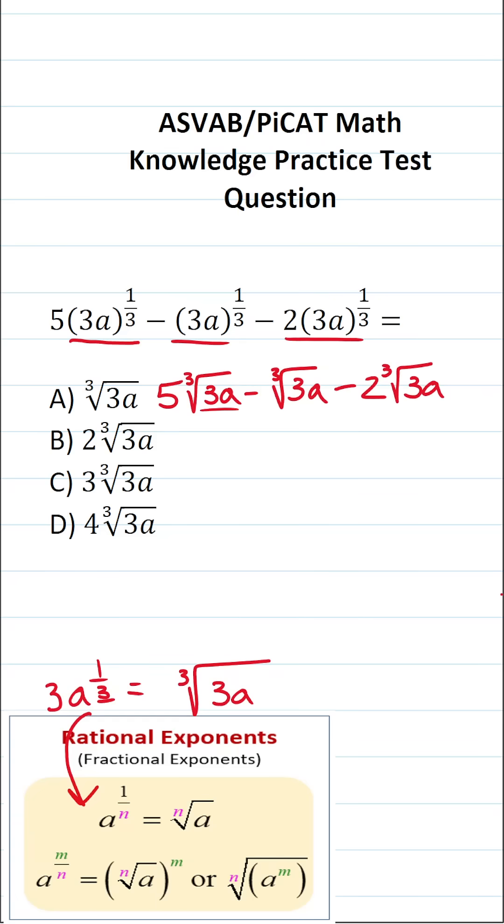Now, since these all have the radical cube root of 3a, we can treat them like like terms and simply do this subtraction. This is the same thing as doing—if it's helpful, put a 1 here.